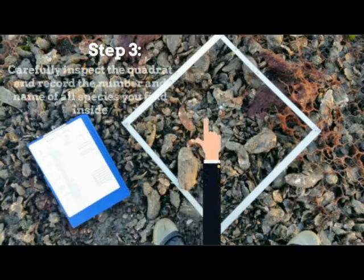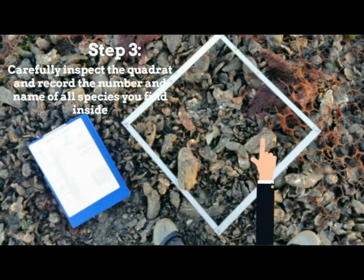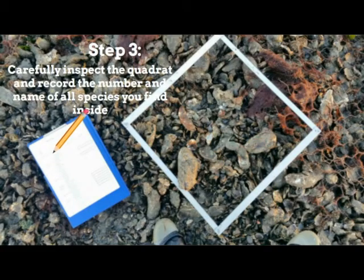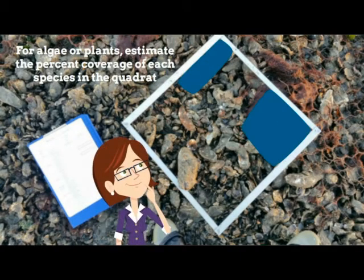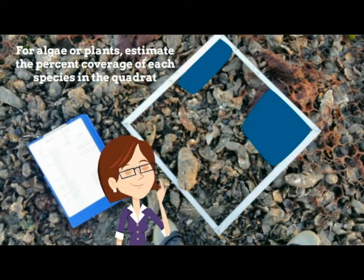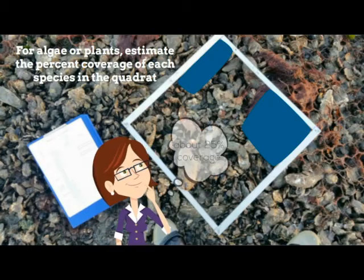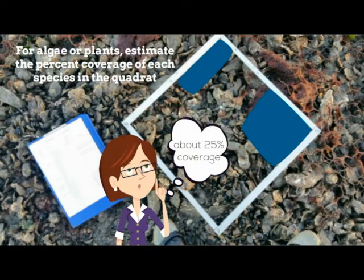Step 3: Carefully inspect the quadrat and record the number and name of all the species you find inside. For algae or plants, estimate the percent coverage of each species in the quadrat.